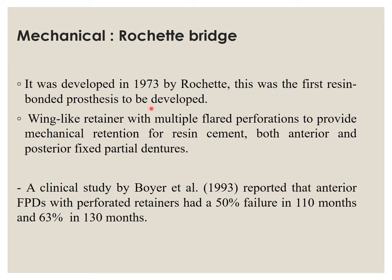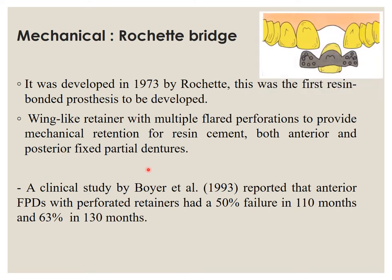Coming to the mechanical type — the Rochette bridge — developed in 1973 and the first one to be developed. It looks like a wing-like retainer with multiple flared perforations to provide mechanical retention for resin cement, for both anterior and posterior fixed partial dentures. A clinical study by Bowie et al. showed that anterior FPDs with perforated retainers had 50% failure at 110 months and 63% failure at 130 months, demonstrating its limited lifespan.